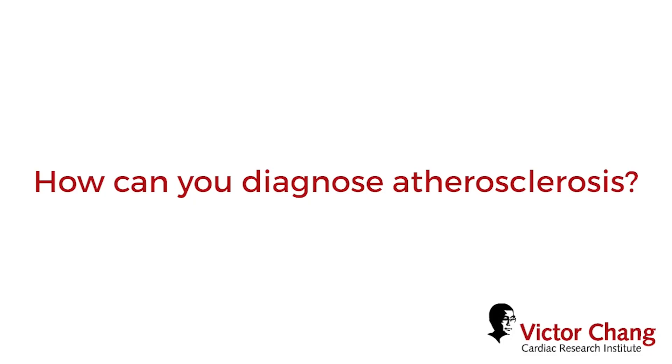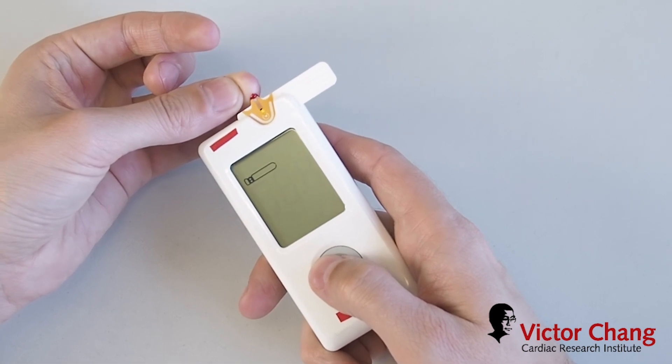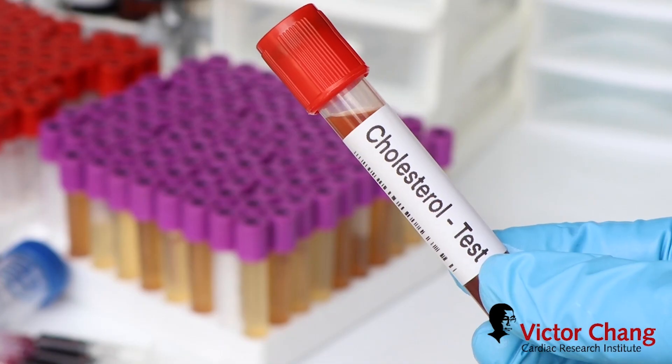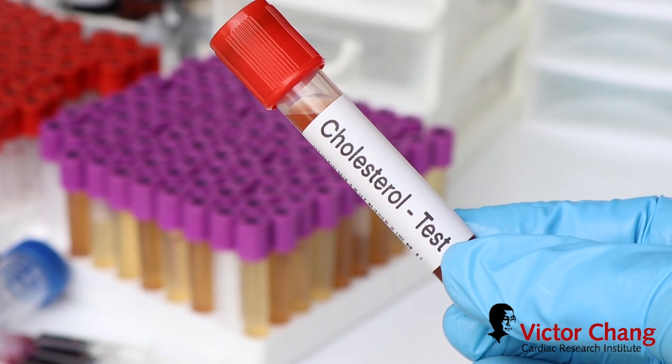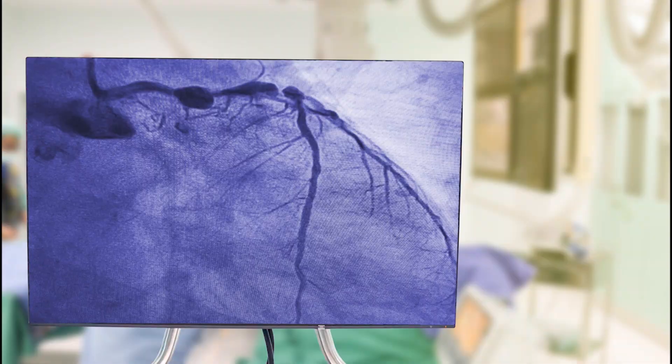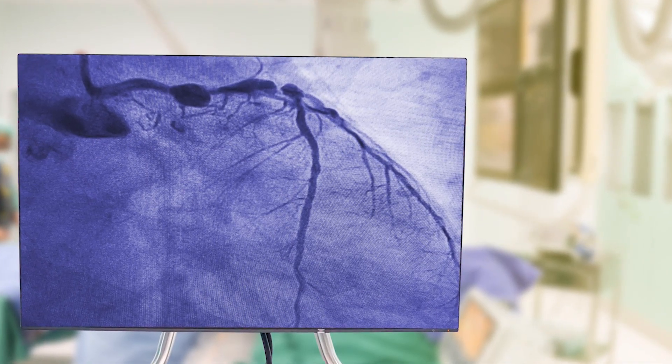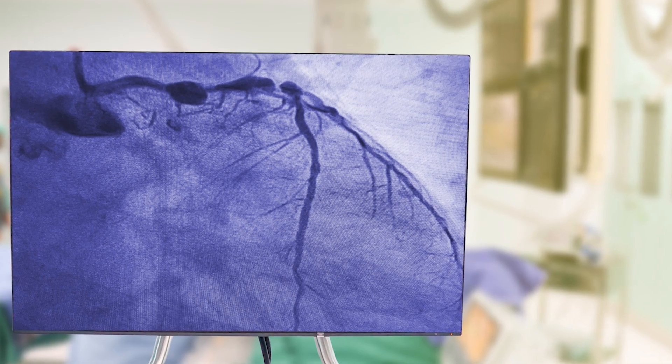The best way to diagnose atherosclerosis is before any events — before a heart attack or stroke. Atherosclerosis can be fairly reliably predicted by different risk scores, calculating risk based on things like diabetes, age, smoking status, and cholesterol levels. This allows us to predict who has the most severe forms of atherosclerosis and their likelihood of having a heart attack, stroke, or death over the next 10-year period. Other diagnostic methods include imaging studies such as CT angiography or invasive catheter-based angiography, such as a coronary angiogram.